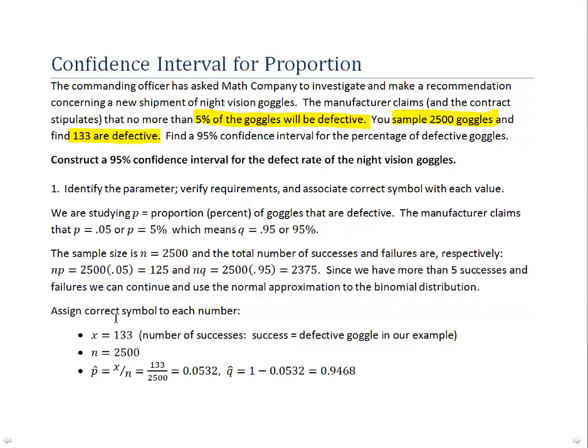So we've identified the parameter. It's P, a proportion which in this case represents the percent of goggles that are defective. We're good to go to use the technique, and now we need to go back and read the paragraph and identify each number and assign it the correct statistical symbol.